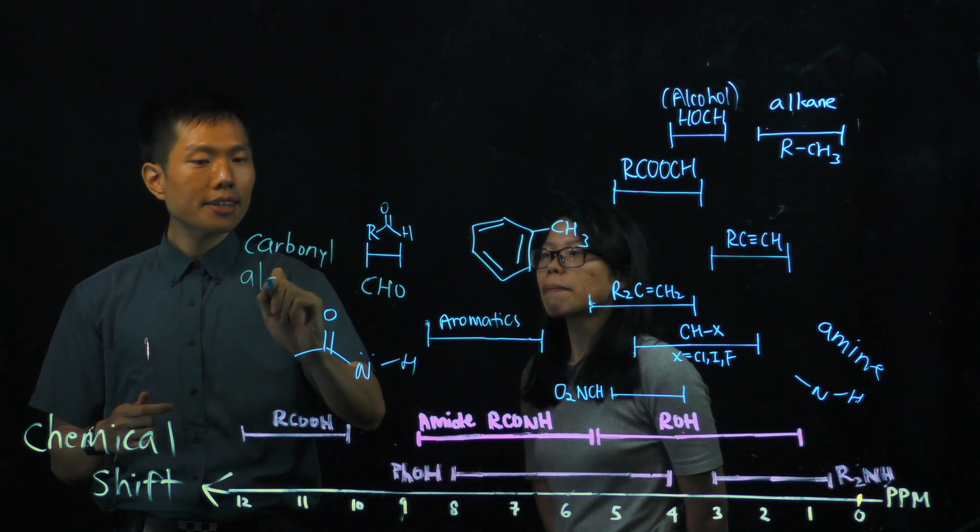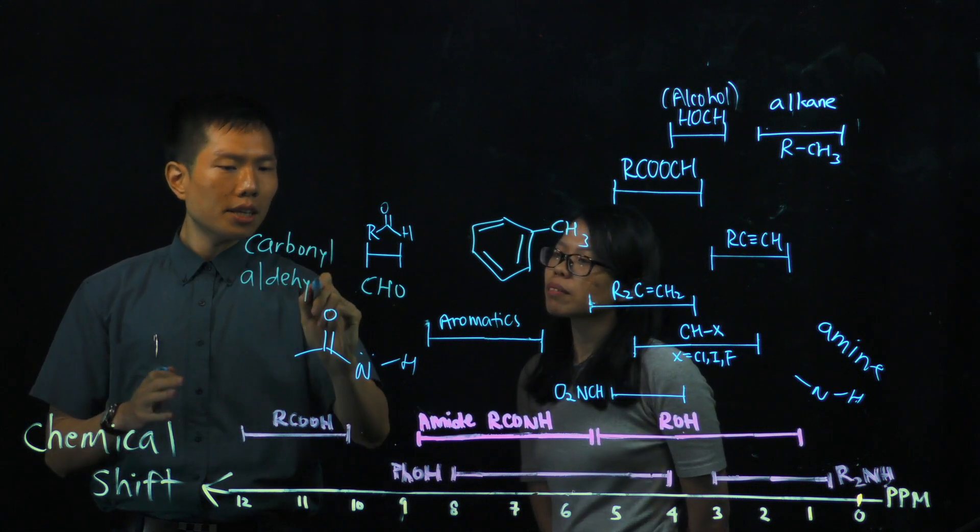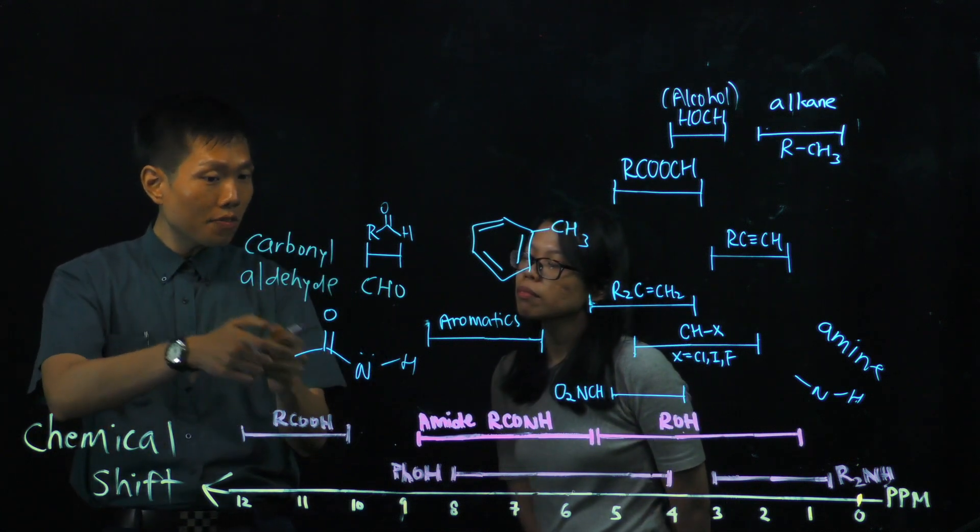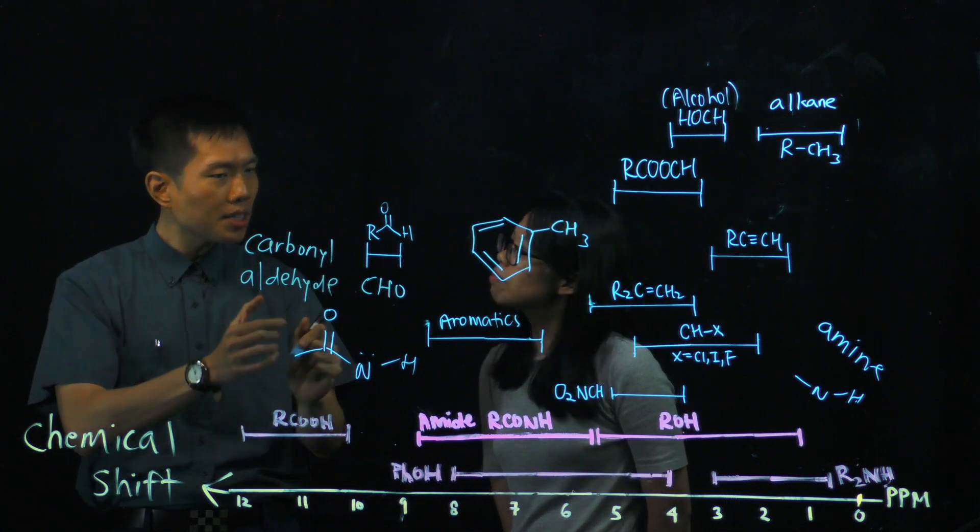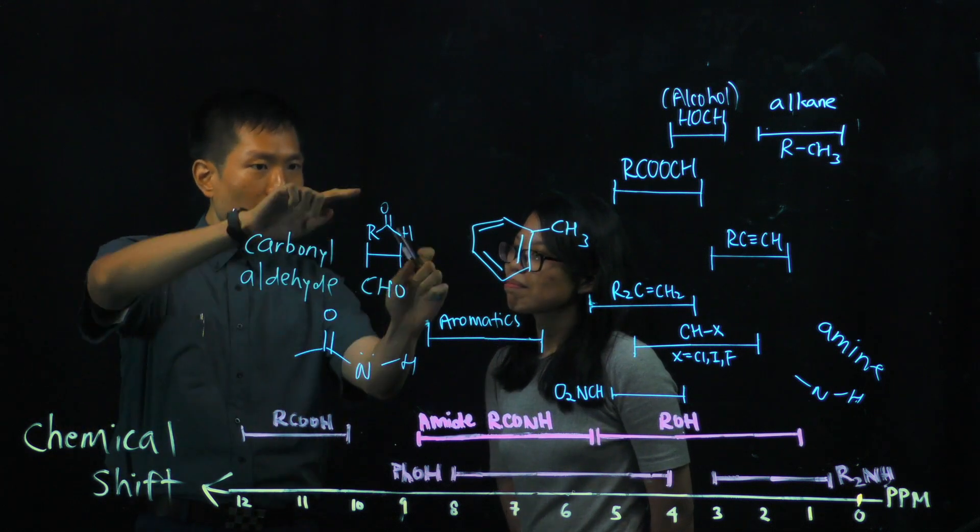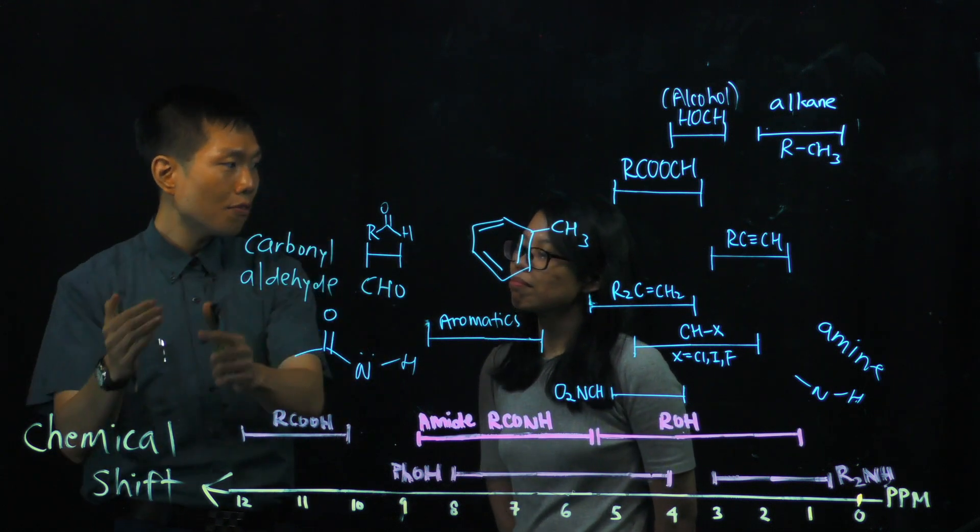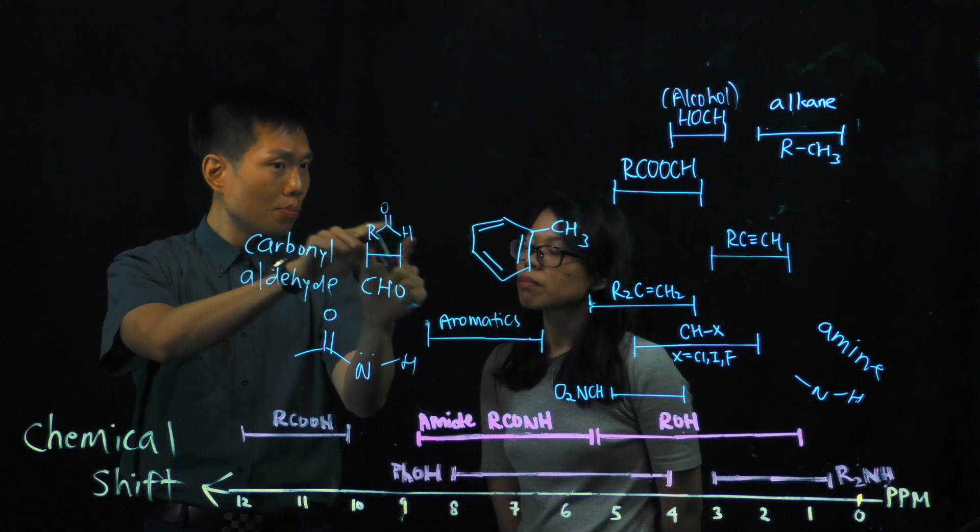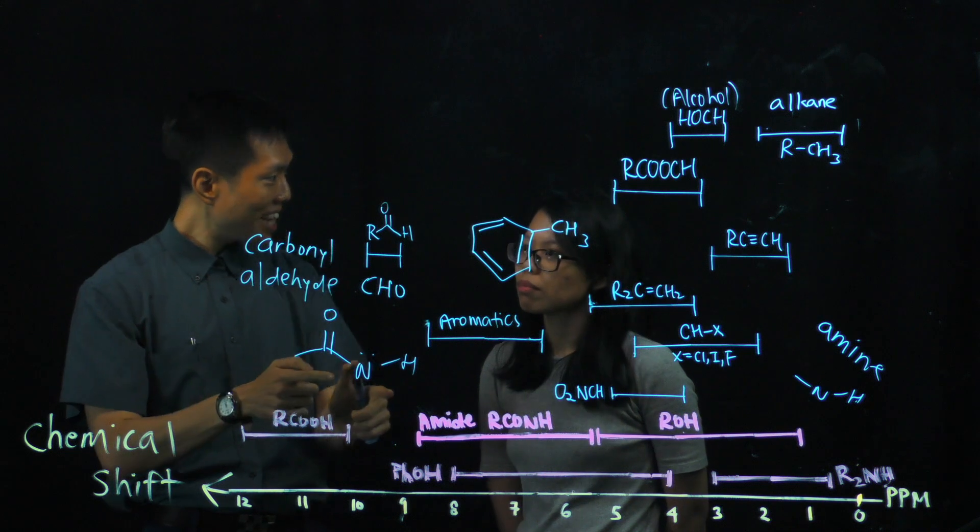An aldehyde. And the proton here is very deshielded because of, again, the existence of the CO double bond. And you notice and understand by now that the aldehyde proton should be more downfield than that of an amide because it's closer to the carbon than here. Make sense?